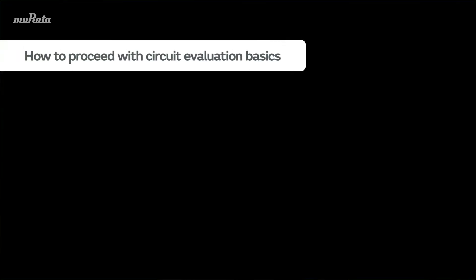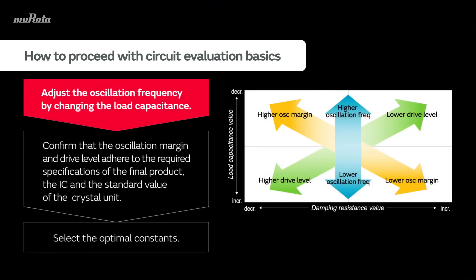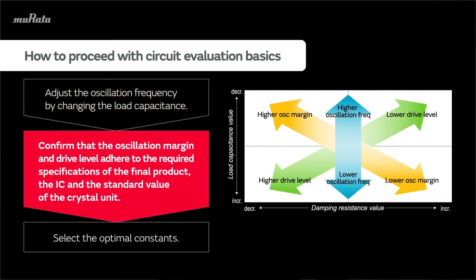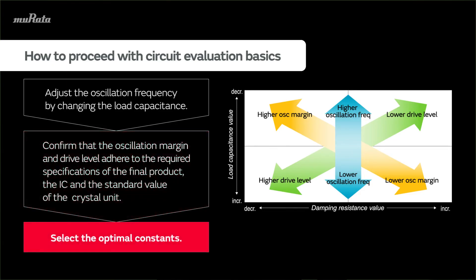This section describes how to proceed with circuit evaluation basics. First, adjust the oscillation frequency by changing the load capacitance. Then confirm that the oscillation margin and the drive level adhere to the required specifications of the final product, the IC, and the standard value of the crystal unit. These steps for selecting the optimal constant are the basic methods for circuit evaluations.